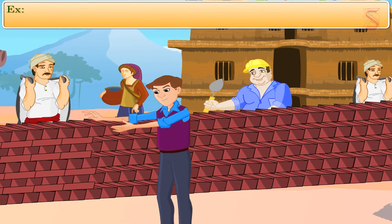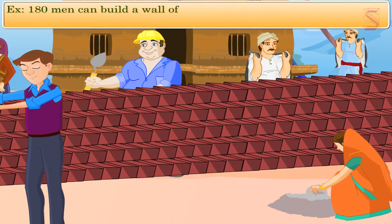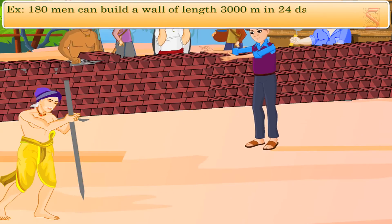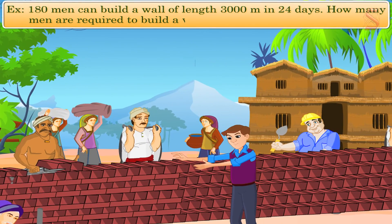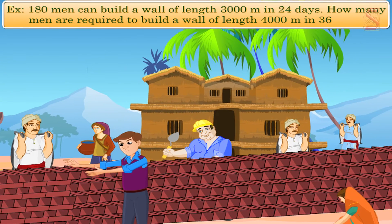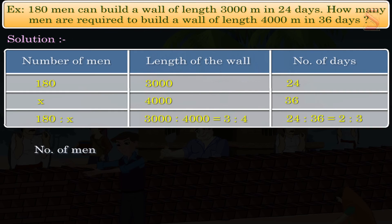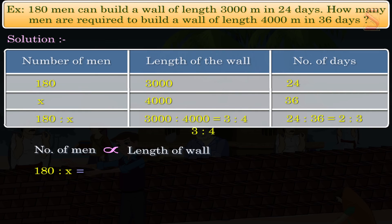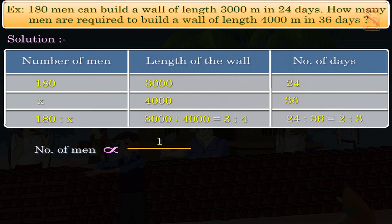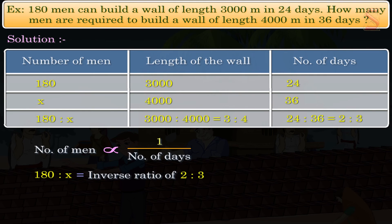Here is another example. How many men are required to build a wall of length 4000 meters in 36 days? The number of men required to complete the work is directly proportional to the length of the wall, so we get 180 is to x equal to 3 is to 4. And the number of men working to build the wall is inversely proportional to the number of days they are working, so we get 180 is to x equal to the inverse ratio of 2 is to 3, that is, 180 is to x equal to 3 is to 2.